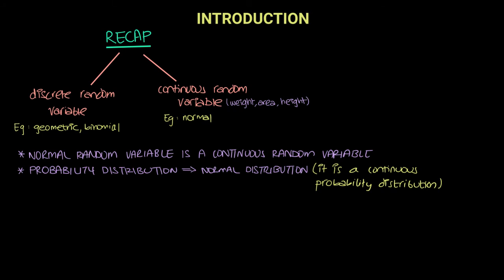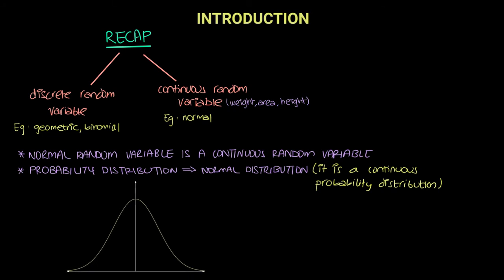The question is: how do we compute probabilities of the normal random variable? Let me first show you the graph of a normal distribution. This is the graph of a normal distribution — it is a bell-shaped curve, and it is symmetrical about the y-axis.